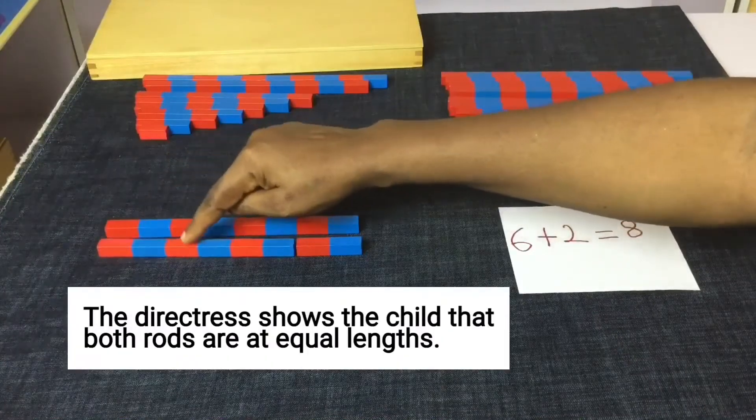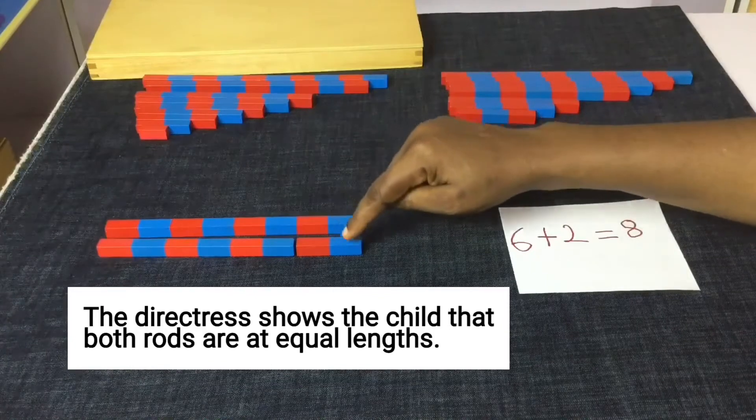The directress shows the child that both rods are at equal lengths.